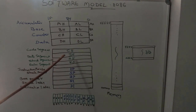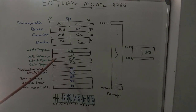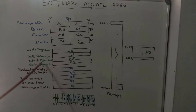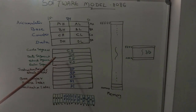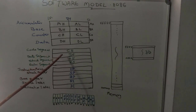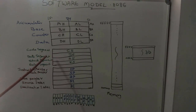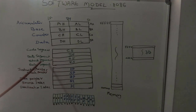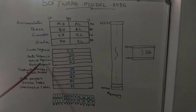Next come the segment registers. CS is the code segment register, DS is the data segment register, SS is the stack segment register, and ES is the extra segment register. The CS register stores the starting address of the code segment, DS stores the starting address of the data segment, SS stores the starting address of the stack segment, and ES stores the starting address of the extra segment.